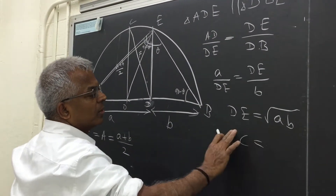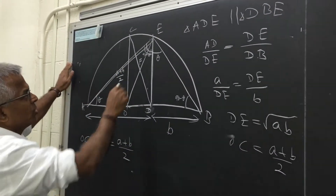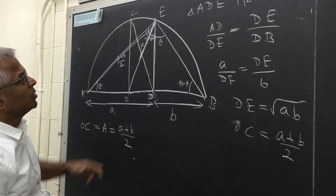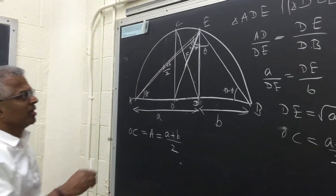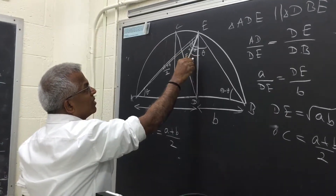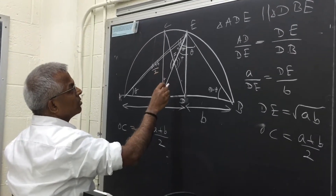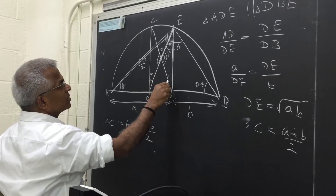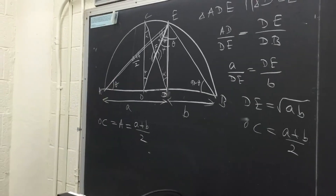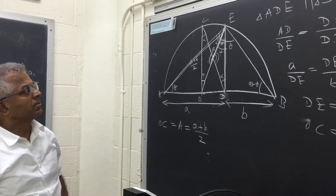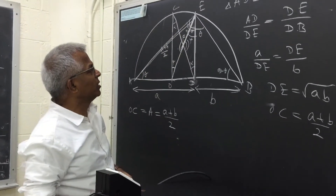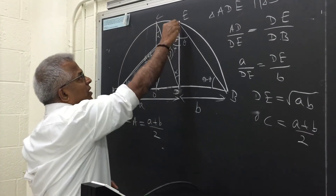So OC is the arithmetic mean. In the same way, you can show that the distance EF is the harmonic mean. The proof uses similar triangles again: this angle and this angle are equal (both φ), so the remaining angles must also match. You then have two similar triangles, one side being the arithmetic mean and another the geometric mean. Writing down the ratio shows that the distance EF turns out to be the harmonic mean.